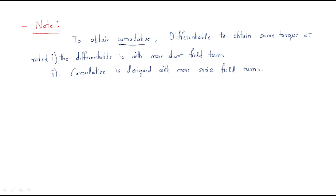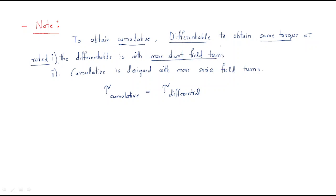To obtain the cumulative and differential motor at the same torque, to maintain the cumulative motor and differential motor both operating together with the same torque, the first thing is: for the differential motor, you should make the number of turns of the shunt field more — that means you should increase the shunt field turns.